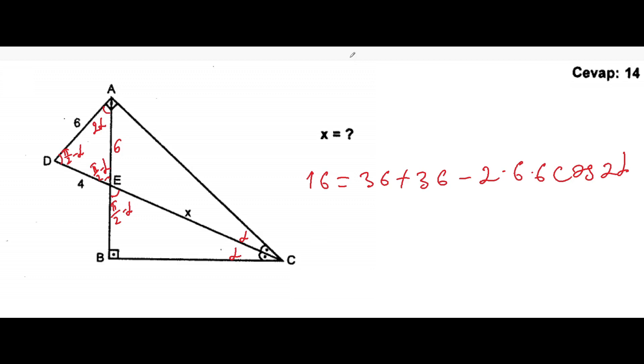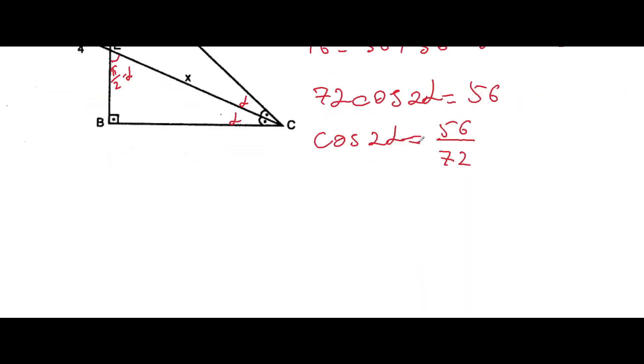2 times 6 times 6 will be 72. Cosine 2α will be equal to, if we will subtract from both sides 16 here. Cosine 2α will be equal to, if we will divide by 72, we get 56 over 72. I'm doing it shortly.